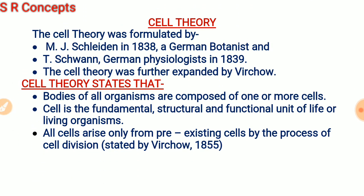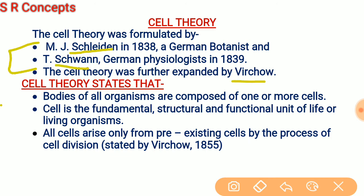The next topic is cell theory. Cell theory is a group of postulates about cells. Who gave the cell theory? It was Schleiden, Schwann, and Virchow. First, Schleiden and Schwann proposed the cell theory, and it was later extended by Virchow.